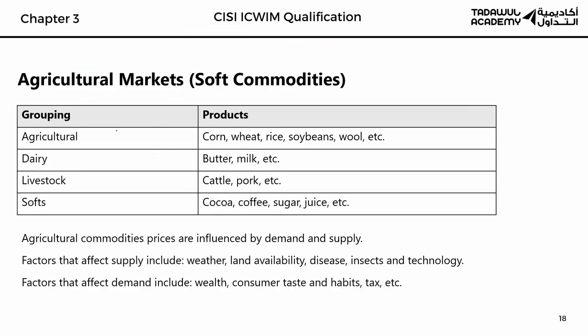Now we are going to look at commodities. Commodities are divided into soft commodities and hard commodities. Soft commodities are what we call agricultural commodities. Examples of these are corn, wheat, rice, butter, pork, cocoa, coffee, sugar, and things like that.